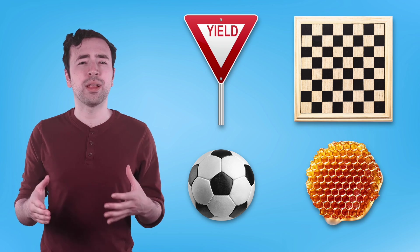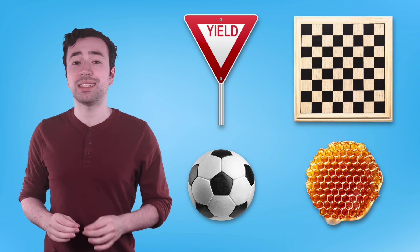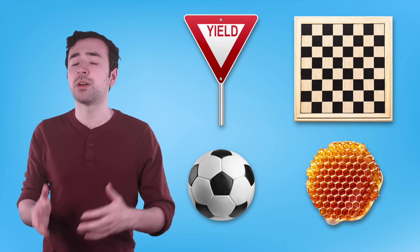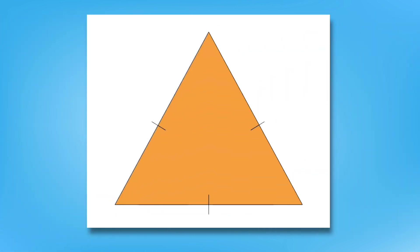Sometimes it can be easy to tell if a polygon is regular, but not always. We can mark the sides and angles of polygons to help identify if they're regular or irregular. Here's a triangle that has little marks on its sides — they mean that the side lengths are the same, or congruent. To show that side lengths are congruent, we use matching hatchmarks. We can also use angle arcs to show that angle measurements are congruent. A regular polygon will have matching hatchmarks on every side and matching angle arcs on every angle. An irregular polygon might have some matching hatchmarks, but not on every side, and may have a couple of matching angles, but not every angle.